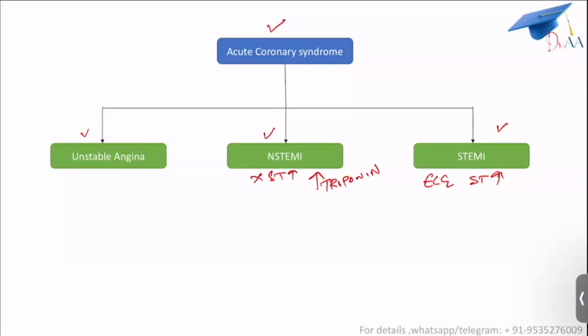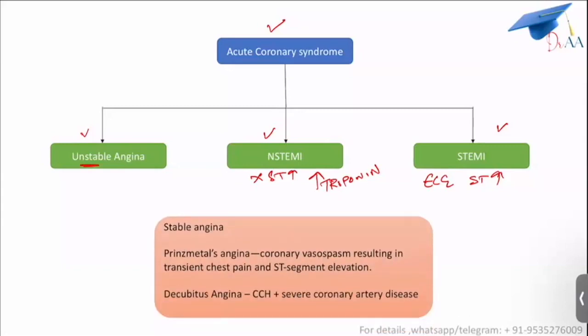Now coming to unstable angina — if there is something known as unstable angina, there should be something known as stable angina also. In stable angina, there are no ECG changes, no ST-segment elevation, and there is no elevation of cardiac enzymes like troponin.